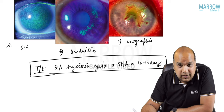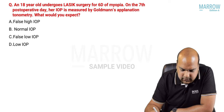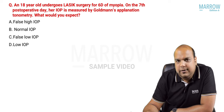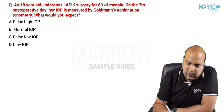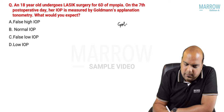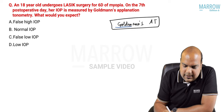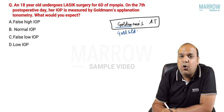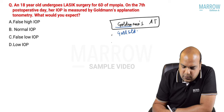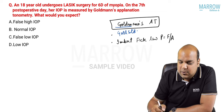Next: an 18-year-old undergoes LASIK surgery for 6 diopters of myopia. On the seventh post-operative day, IOP is measured by Goldmann applanation tonometry. Goldmann's is the gold standard for tonometry, but it depends on corneal thickness, based on the Imbert-Fick law: pressure inside a sphere equals force applied divided by area applanated.